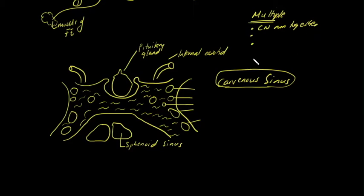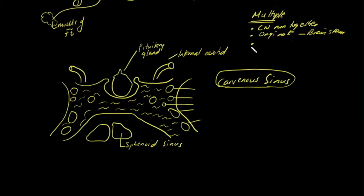For example, at the cavernous sinus multiple cranial nerves run together, so a pathology there will affect all those nerves. Or the abnormality is where they originate — the brainstem. A brainstem lesion, such as in the pons, gives you cranial nerves five, six, seven, and eight affected. Finally, multiple lesions — such as from stroke, basal meningitis, or multiple sclerosis — can give patchy lesions affecting different cranial nerves.